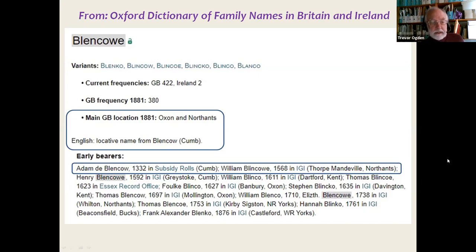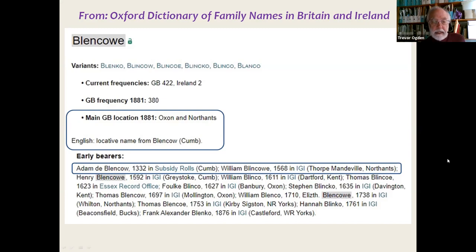You naturally ask, how do we know the original family came from Blenco in Cumberland? That's where the Oxford Dictionary of Family Names in Britain and Ireland comes in. It identifies the source as a locative name from Blenco in Cumbria. The oldest reference is to an Adam de Blenco in 1332 from the subsidy rolls in Cumbria — clearly identified as coming from that hamlet. The next reference is 1592, also in Greystoke in Cumbria. By 1568, there's already a reference in Northamptonshire. Initially the name uses 'de', clearly a locative name, but the 'de' is dropped and it simply becomes an inherited hereditary surname.